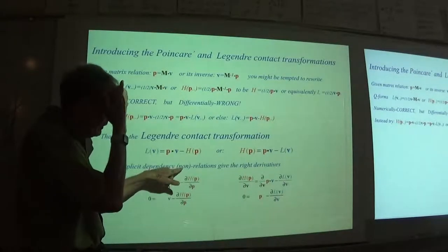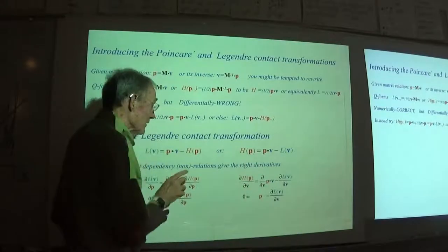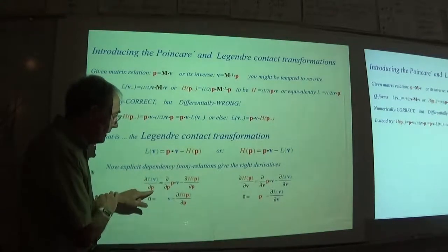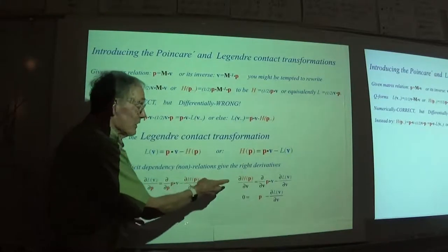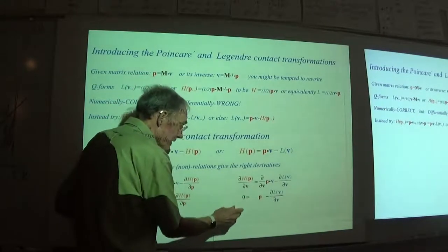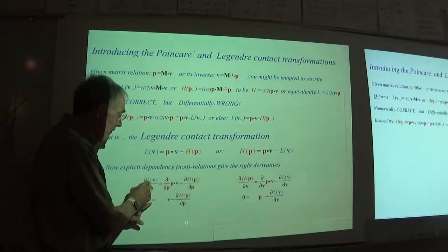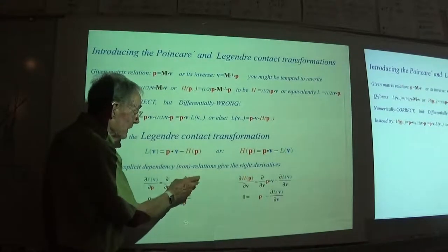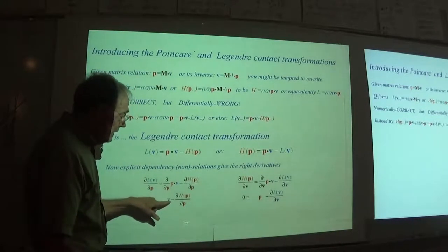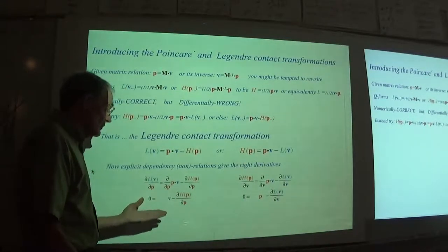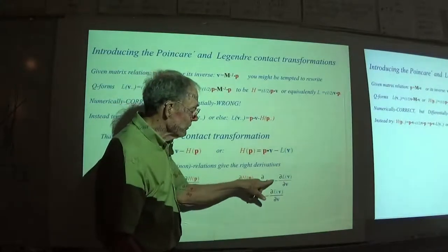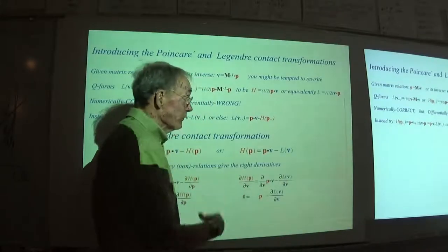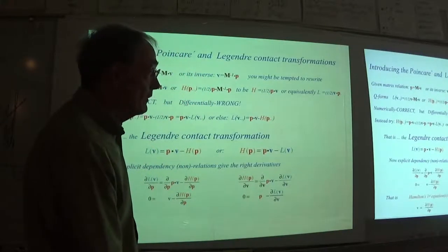The partial derivative of the Lagrangian with respect to momentum is identically zero, as is the partial derivative of the Hamiltonian with respect to velocity—identically zero. Using the expression L = P·V − H, the partial derivative with respect to P of P·V is just plain V, and the partial derivative of H with respect to P does exist, giving V = ∂H/∂P. That's the first equation of Hamilton. Similarly, we get the first equation of Lagrange.